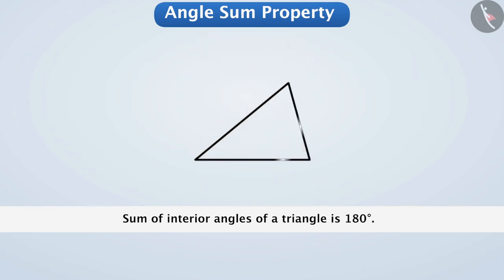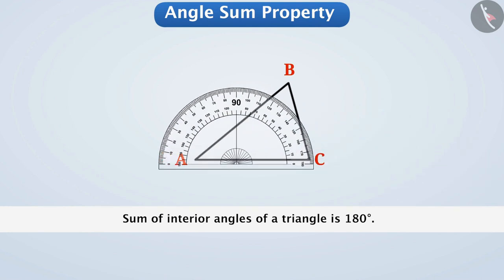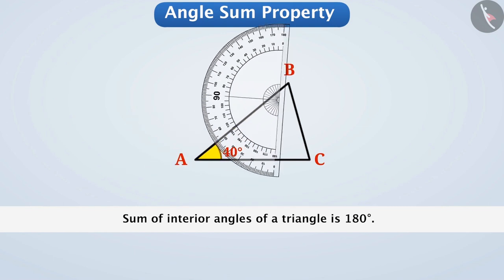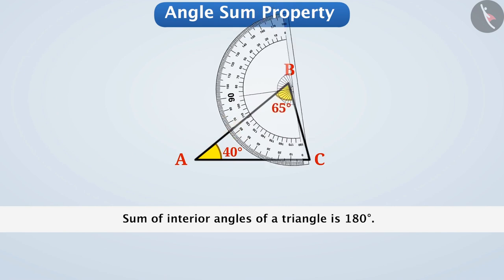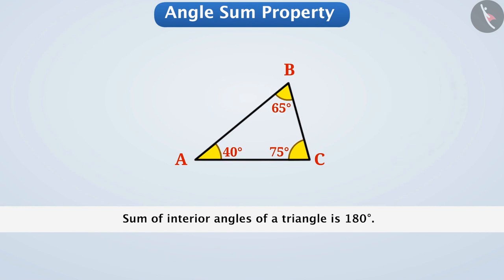We have drawn a triangle here; we will call it triangle ABC. Let us measure all the angles with the help of a protractor. If we measure angle A with a protractor, we get 40 degrees. Similarly, the measure of angle B is 65 degrees and the measure of angle C is 75 degrees. If we add all three angles of triangle ABC, we will get 180 degrees.